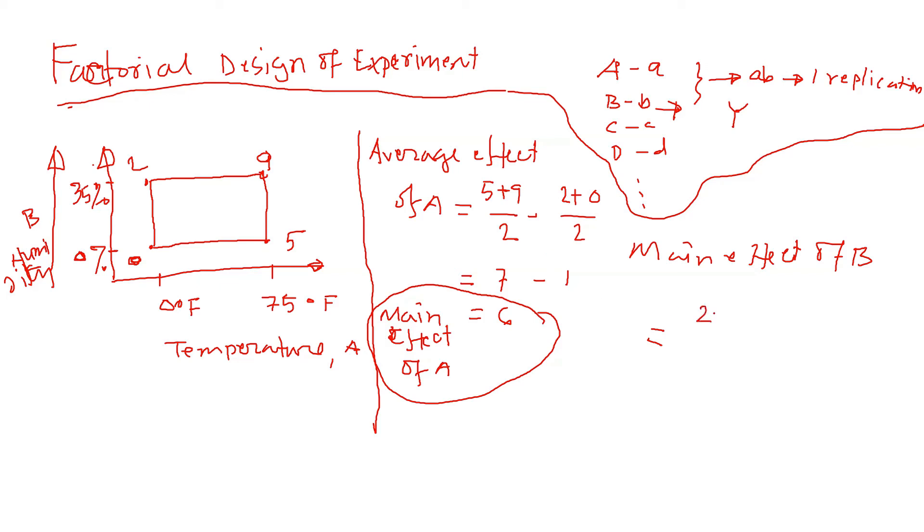So 2 plus 9 divided by 2, minus the average of B low, which is 5 plus 0, divided by 2. This is 11 by 2, which is 5.5, minus 2.5, equals 3.0. That is the main effect of B.